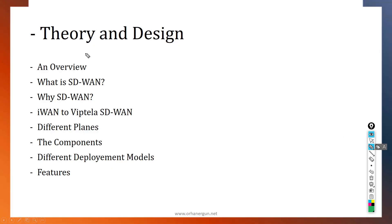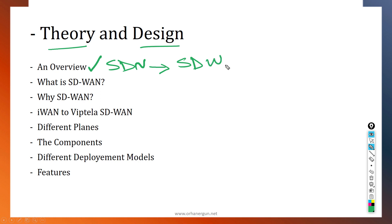To start, I will talk about the theory and design of the Cisco SD-WAN solution. I will do an overview of software-defined networking and especially software-defined wide area networks. Then I will talk about what SD-WAN is, why we need it, and what requirements are forcing us to transition from classical WAN to software-defined wide area networks.